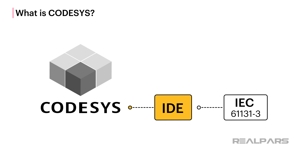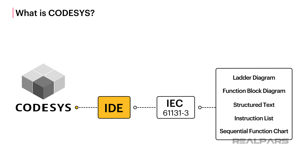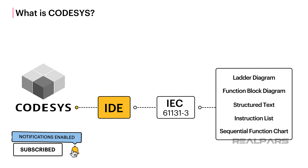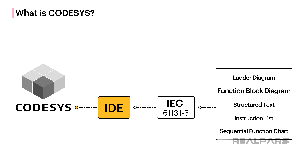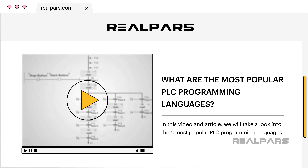In case you're not familiar with it, the IEC 61131-3 standard is an international standard that defines the programming languages used to program PLCs. The programming languages defined in this standard include ladder diagram, function block diagram, structured text, instruction list, and sequential function chart. You can learn more about the IEC 61131-3 programming languages in the RealPars post, 'What are the most popular PLC programming languages,' which is linked in the description below this video.